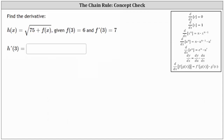We are given h of x equals the square root of the quantity 75 plus f of x, as well as f of three equals six, and f prime of three equals seven. We want to determine the function value h prime of three.